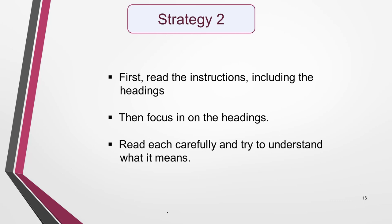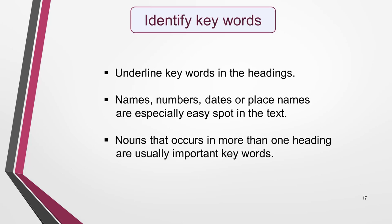Now for Strategy 2: Read the headings first, then the text. First, read the full instructions, including the headings, then focus in on the headings. Read each carefully and try to understand what it means — remember, each will summarise the main idea of the paragraph it matches. Also remember that there will be more headings than paragraphs, so you won't need them all. Next, underline key words in the headings. If a heading contains names, numbers, dates, or place names, underline these to identify them as key words that should be easy to spot in the text. Or there may be a key noun that stands out — it could be one that occurs in more than one heading. Doing this will help you match information in the text and the headings as you read each paragraph.